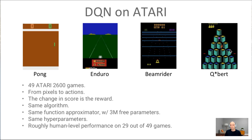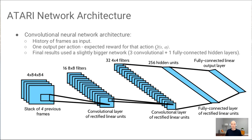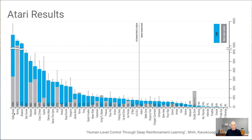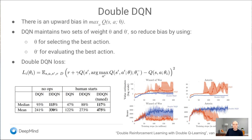The results: the neural network takes in pixels and outputs Q-values for all actions, allowing selection of the optimal action. They used a 3-million-parameter network with hyperparameters for Huber loss, learning rates, and epsilon-greedy. It roughly achieves human-level performance on 29 out of 49 Atari games. The neural net had a convolutional architecture like those used in computer vision at the time. On the chart, the horizontal axis lists all games and the vertical axis shows performance scaled to human level — about two-thirds of games reach or exceed human level. This was the Nature DQN paper in 2015.